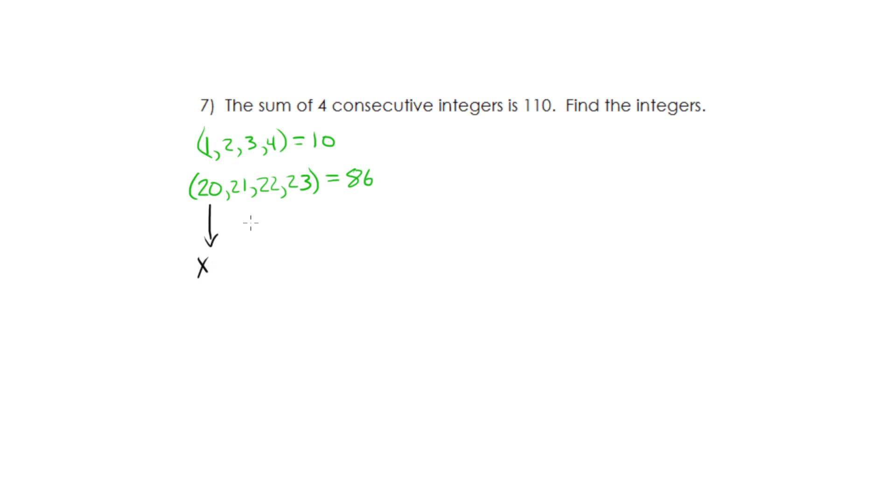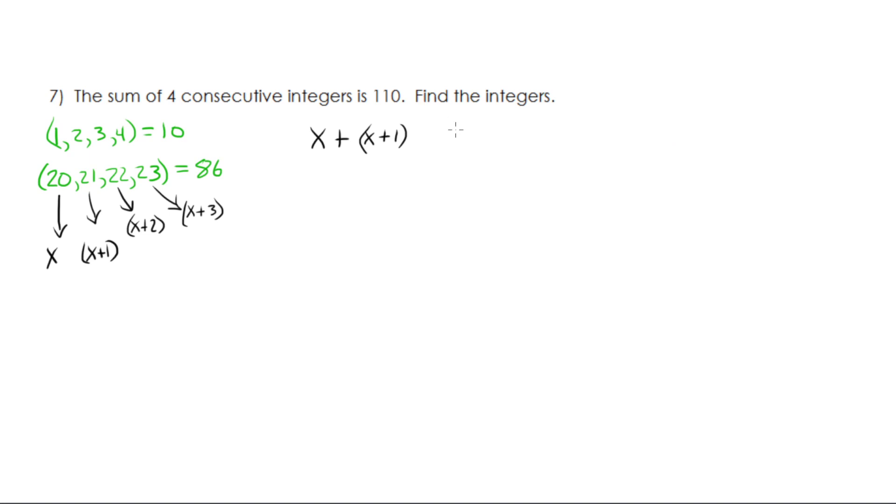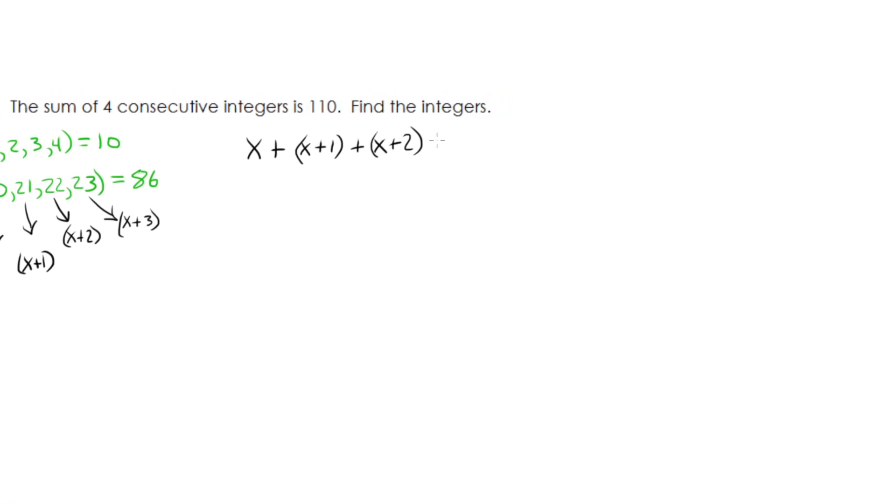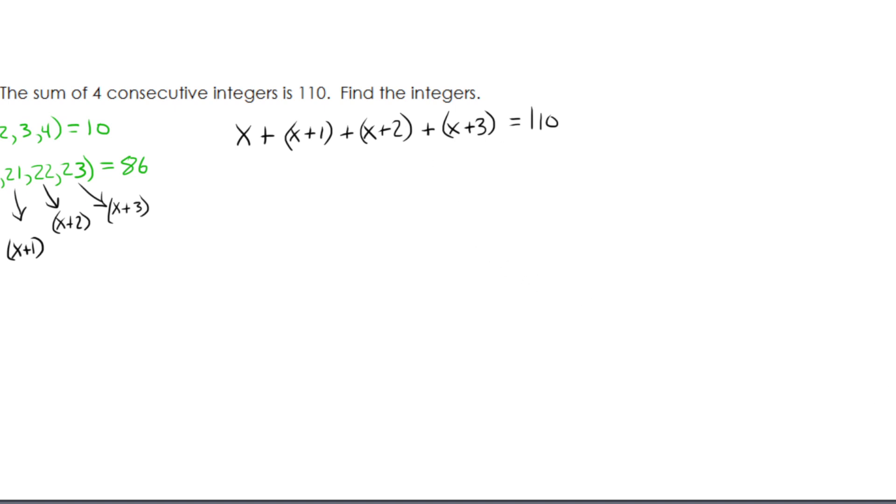Let's do the same thing we did before. If this guy is x, then this guy is x plus 1. This one is x plus 2. And this one is x plus 3. So my overall equation is going to be set up to equal 110. So I'm going to say x plus x plus 1 plus x plus 2 plus x plus 3. All that is going to equal 110. And we can solve that in our next video.